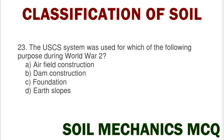Next question: the USCS system was used for which of the following purposes during World War II — option A airfield construction, option B dam construction, option C foundation, option D earth slopes. The correct answer is option A airfield construction.